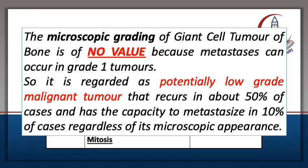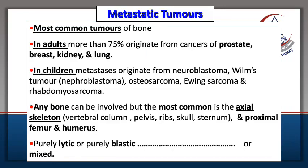Metastatic tumors are considered to be the commonest tumors of the bone. They may occur in adults or in children, and any bone can be affected. It is usually an osteolytic lesion, but sometimes osteoplastic in cases of prostatic adenocarcinoma, or may be mixed.